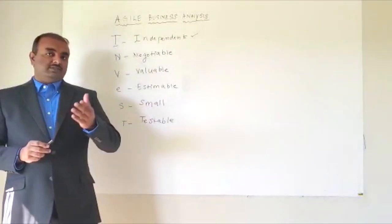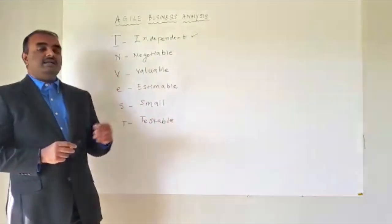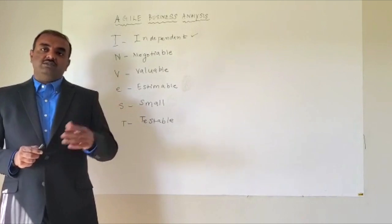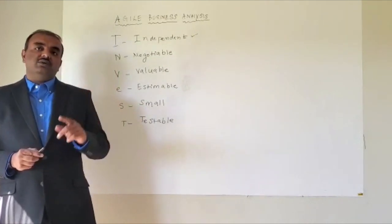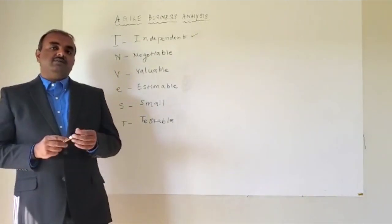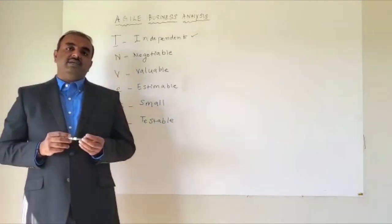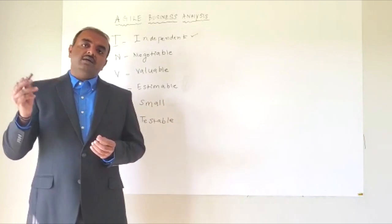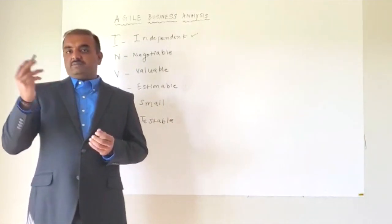Say you have a same story that we took for independent. As a customer, I would like to make a payment to an online store. Now assume that this is one story where in the acceptance criteria, you have three acceptance criteria. One is make a payment using Mastercard, one is make a payment using Visa card, one is make a payment using American Express.